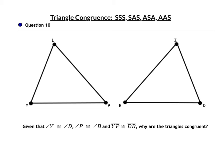Here are two triangles that are flipped toward each other. Angle Y is congruent to angle D, angle P is congruent to angle B, and YP is congruent to BD. Notice how the side is included — it's between the two angles. That's what you have to have in order to have Angle-Side-Angle, and that is what we have.